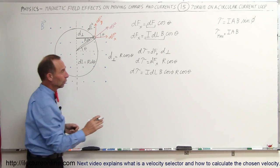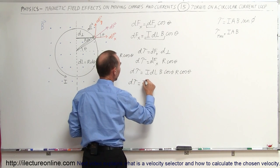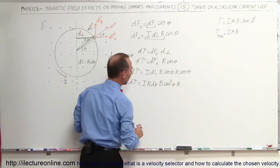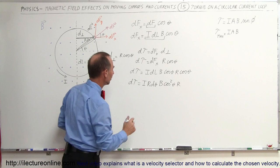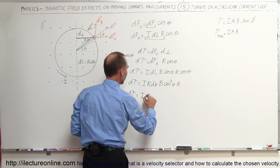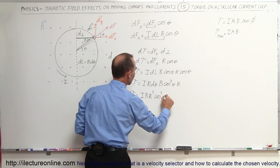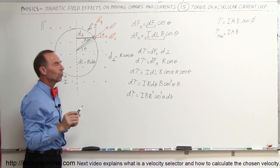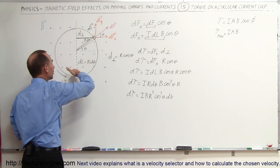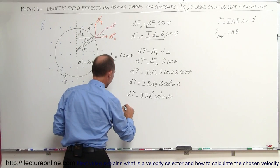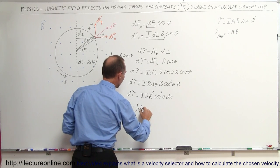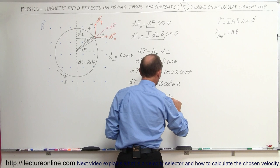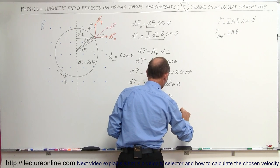Making that substitution and multiplying the cosines together, we have d-torque equals I times r dθ times B times cosine squared of theta times r. Cleaning this up, we have d-torque equals I times B times r² times cosine² of theta dθ. Now we're going to integrate this over the whole circle — or we can integrate over half a circle and double it, since we have an equal amount of torque from the other side. Therefore, the torque equals twice the integral of all the d-torques, which is 2IBr² times the integral from 0 to π of cosine² of theta dθ.